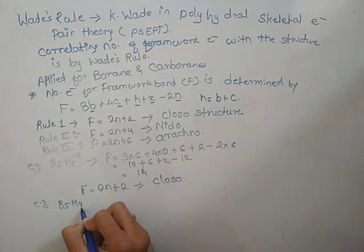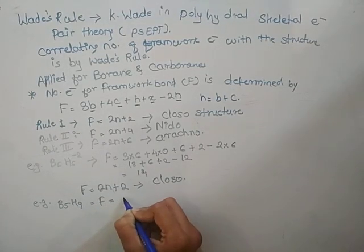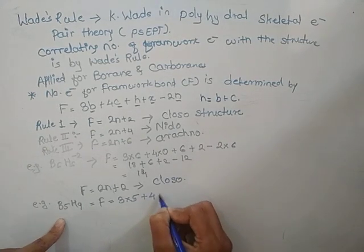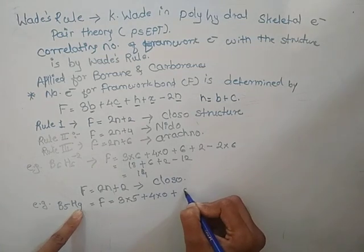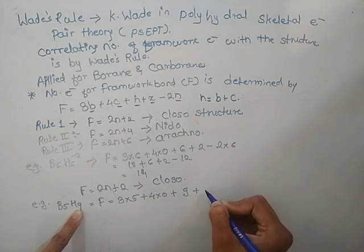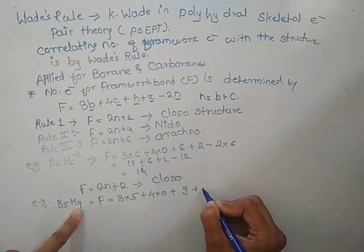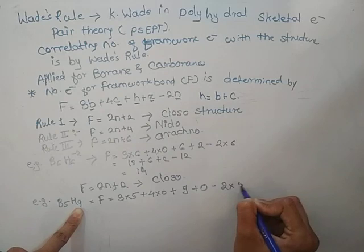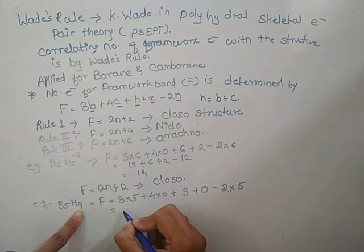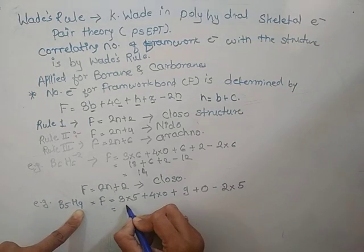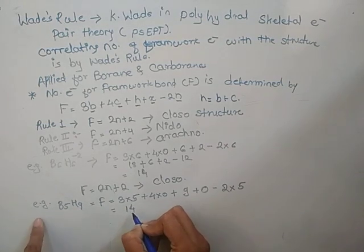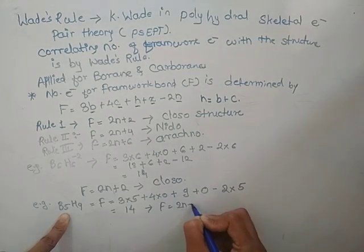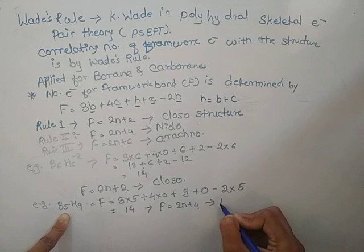Second example: B5H9. F is equal to 3 into 5 (number of boron) plus 4 into 0 (no carbon) plus 9 (hydrogen) plus 0 (negative ions are absent) minus 2 into 5 (boron, carbon absent). Hence N equals 5. F equals 14, and 2N plus 4 equals 14. So the structure is nido.